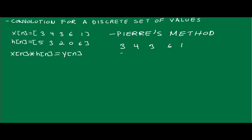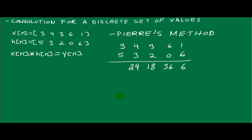All you have to do is: six times one is six, six times six is thirty-six, six times three is eighteen, six times four is twenty-four, and six times three is eighteen.